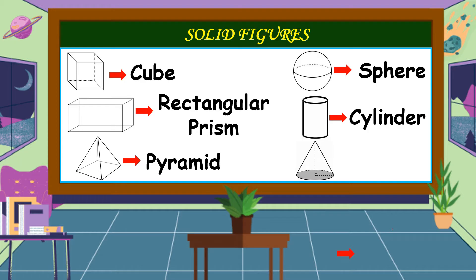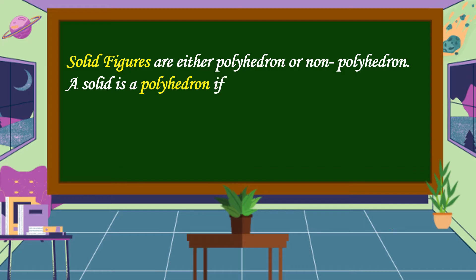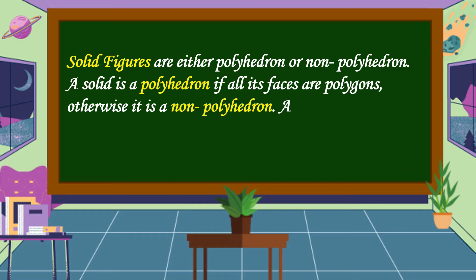Solid figures are either polyhedron or non-polyhedron. A solid is a polyhedron if all its faces are polygons, otherwise it is a non-polyhedron. A polyhedron may be a prism or a pyramid.